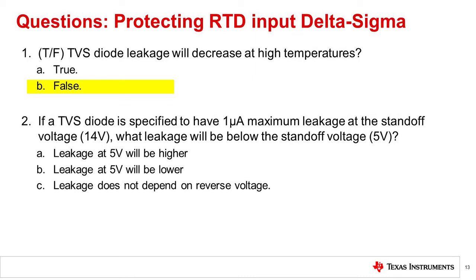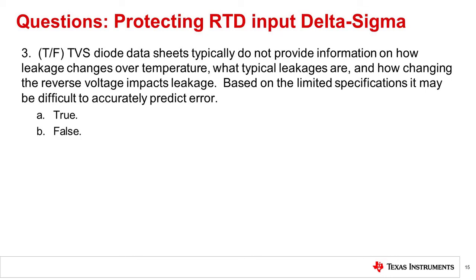The correct answer is B, False. Leakage for all diodes will increase with temperature. Question 2: If a TVS diode is specified to have 1 microamp maximum leakage at the standoff voltage of 14 volts, what leakage will be below the standoff voltage at 5 volts? The correct answer is B — leakage at 5 volts will be lower. Leakage will always decrease when the reverse voltage is decreased. Question 3, True or False: TVS diode data sheets typically do not provide information on how leakage changes over temperature, what typical leakages are, and how changing the reverse voltage impacts leakage — making it difficult to accurately predict error. The correct answer is A, True. TVS data sheets typically provide information on maximum room temperature leakage at the standoff voltage, and this may not be sufficient information to accurately predict error.